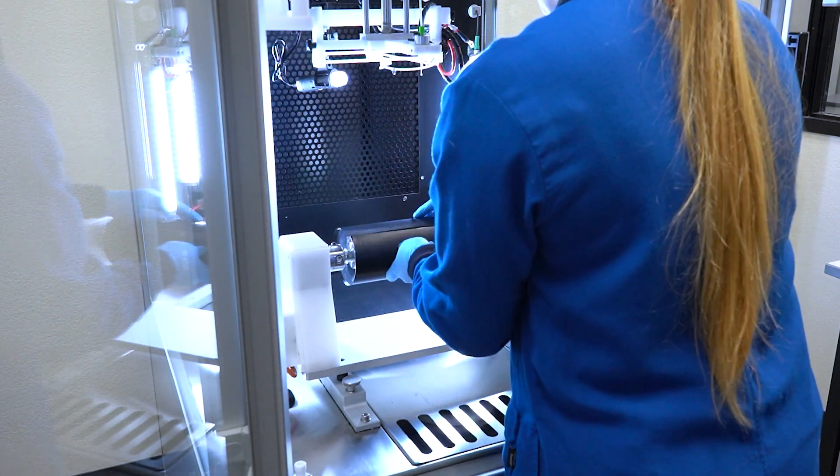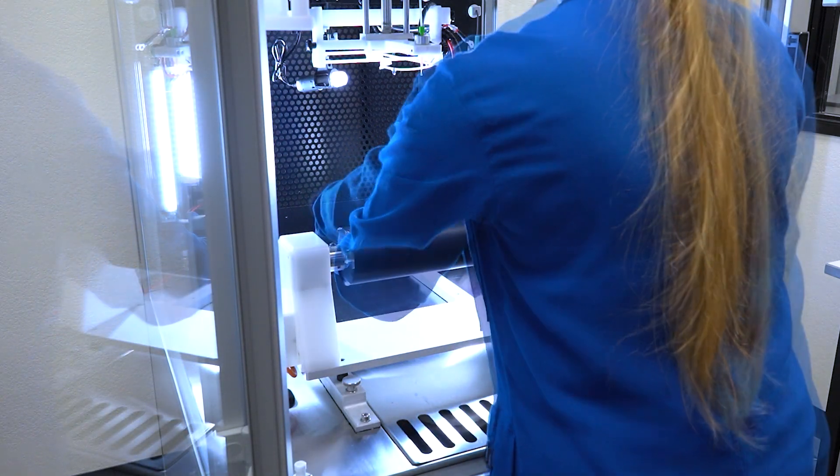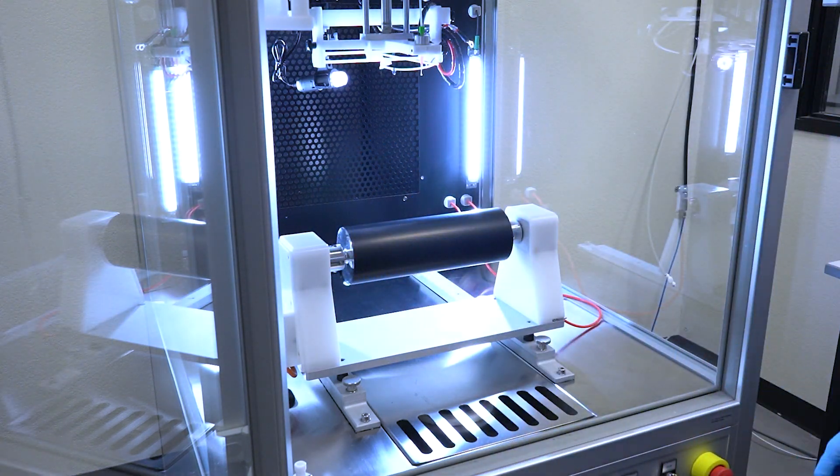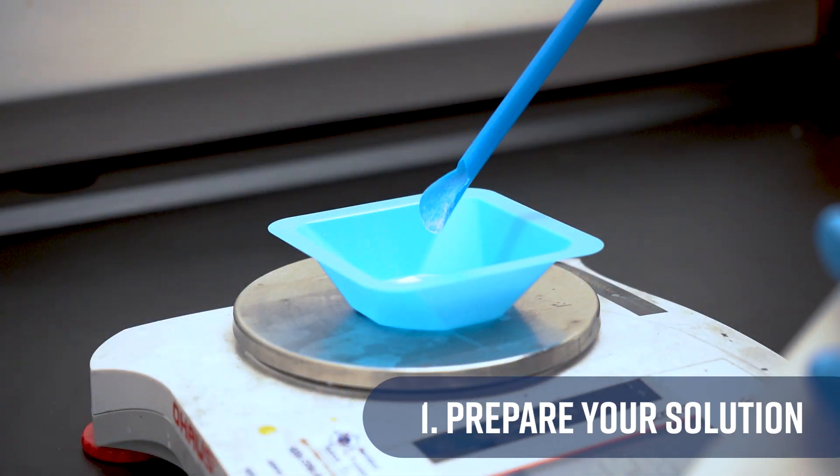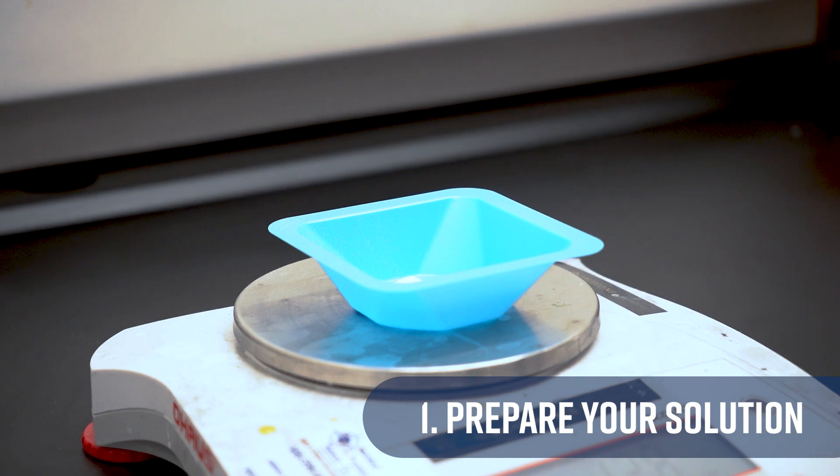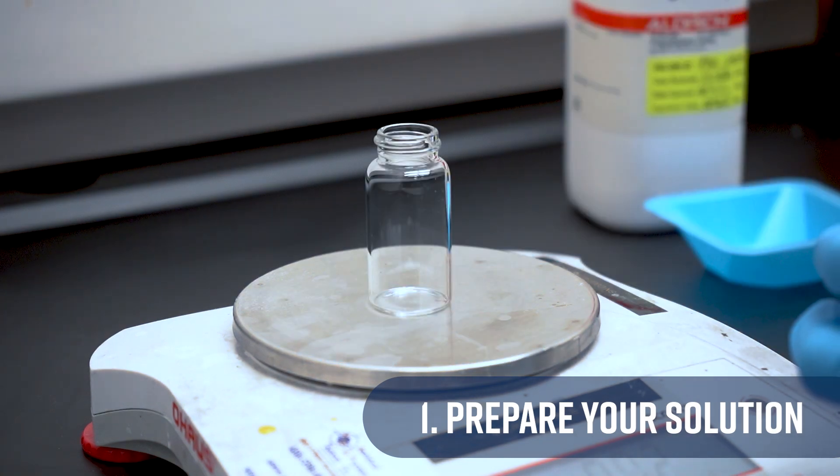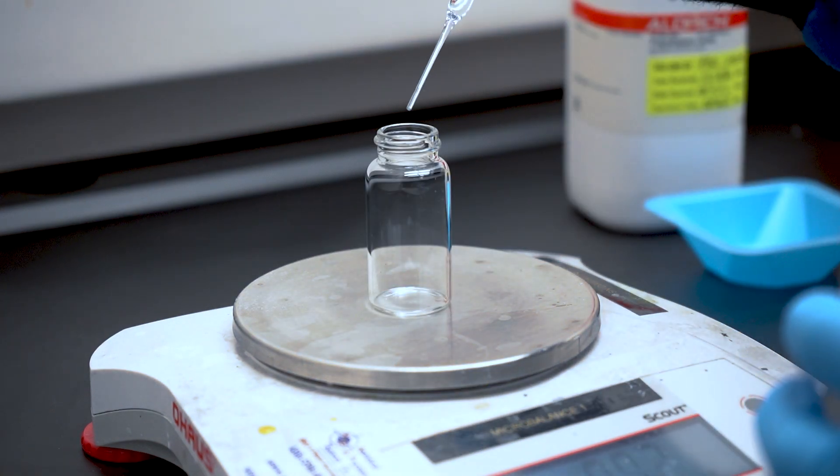Once you have your setup assembled and ready, here's a basic five-step guide to begin electrospinning. Step one, prepare your solution. Start by preparing your polymer solution. This is usually a blend of a polymer and solvent, but it can be made from many materials.